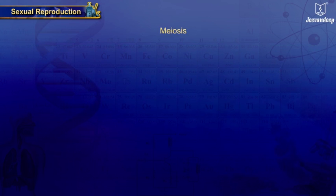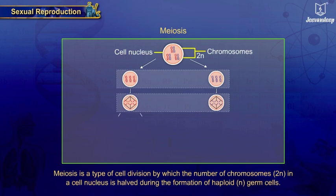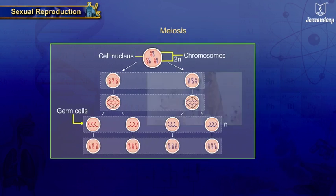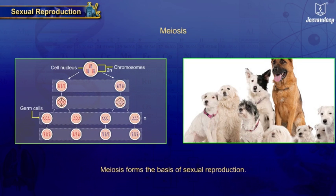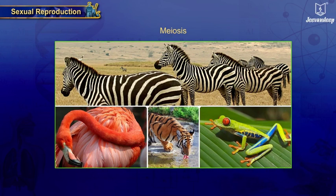Meiosis is a type of cell division by which the number of chromosomes (2N) in a cell nucleus is halved during the formation of haploid (N) germ cells. Since meiosis forms the basis of sexual reproduction, it increases the genetic diversity of the offspring. This supports evolution of organisms and creates biodiversity.